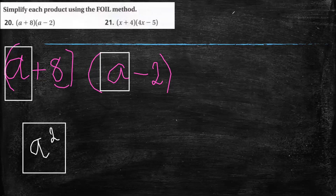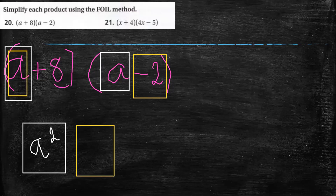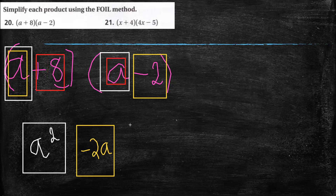Then O — outside: a times negative 2 equals negative 2a. Then I — inner: 8 and a. If you multiply them you get positive 8a. Then L — last: 8 and negative 2, which is negative 16.